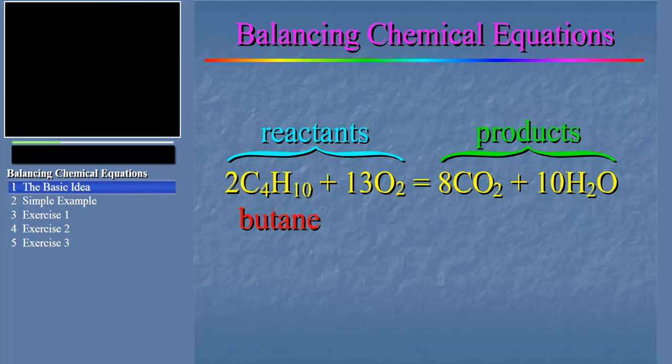You'll notice that there are numbers, which we call coefficients, in front of each chemical species, both on the reactant side and the product side. These coefficients are used to balance the chemical reaction. They indicate how many of each species — molecule or ion — participates in the overall reaction.